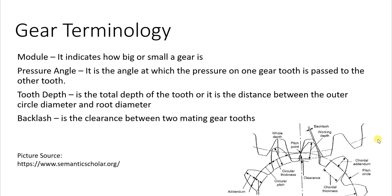We have backlash. Backlash is the clearance between two gear teeth — the teeth of two different gears which are in mating. Then we have tooth depth. Tooth depth is the distance between the tip circle and the root circle. The circle passing through the outer edges is the tip circle, and the circle passing through the inner edges is the root circle, and the distance between these two is tooth depth.